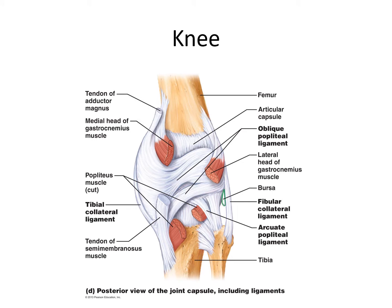Looking at this from the posterior with the joint capsule intact, you can see the tibial collateral ligament — that would be the MCL — and the fibular collateral ligament, or LCL.